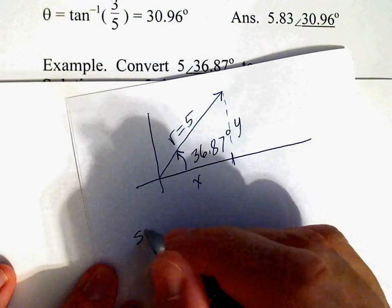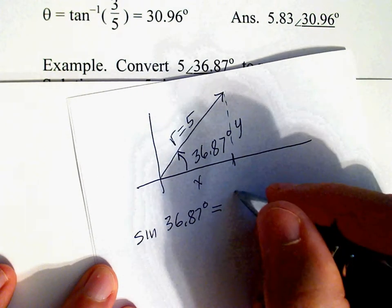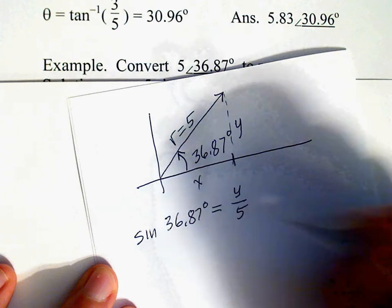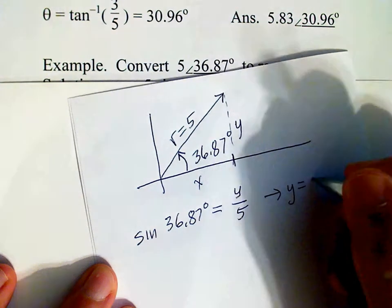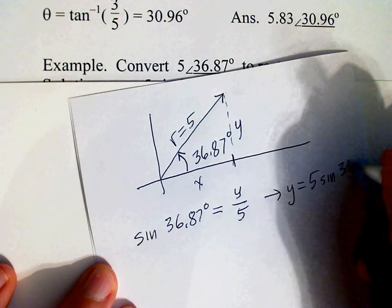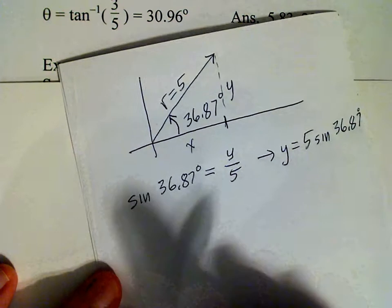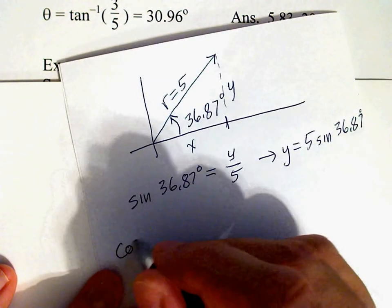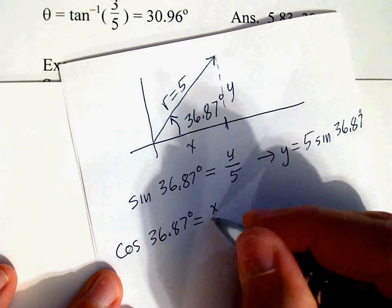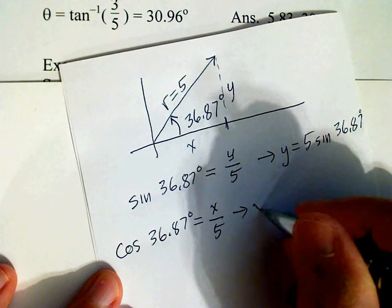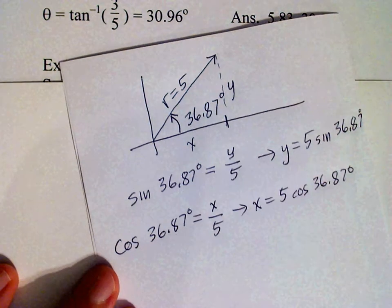We know that sin(36.87°) equals y over 5 from the definition of sine, and therefore y equals 5 times sin(36.87°). We can find that on the calculator. Also, we know that cos(36.87°) equals x over 5, so x equals 5 times cos(36.87°).